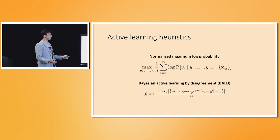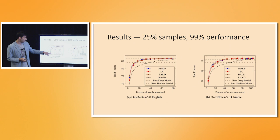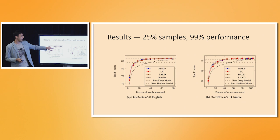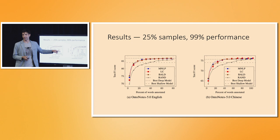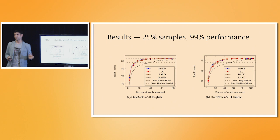We also compared against the Bayesian Active Learning by Disagreement approach using the dropout technique. The results were quite nice: the lower dotted line is the best performance of a linear model, the upper dotted line is 100% of the data performance of the best deep model. IID sampling requires labeling nearly 100% of the data to reach that upper mark, while active learning got within striking distance with only about 25% of the data. Results were comparable on the Chinese variant of the task.